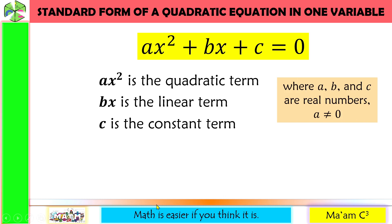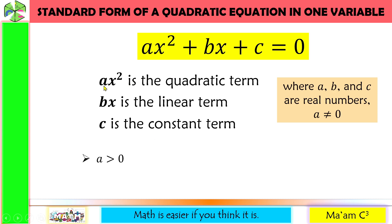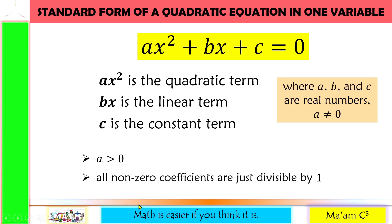Now, for uniformity, and since it has been a custom in mathematics that the leading term is positive, we are going to set our a greater than 0. Also, all non-zero coefficients are divisible by 1, meaning the quadratic equation is expressed in simplest form.